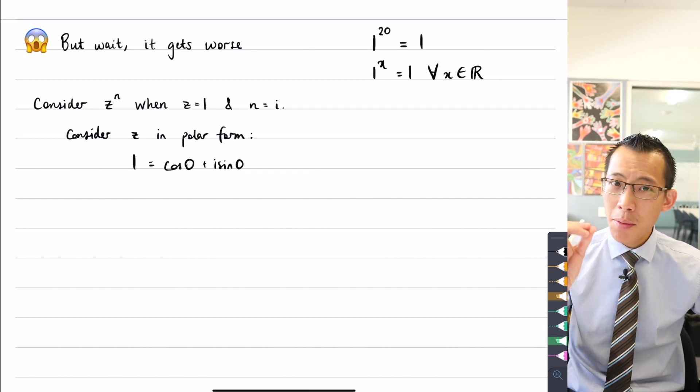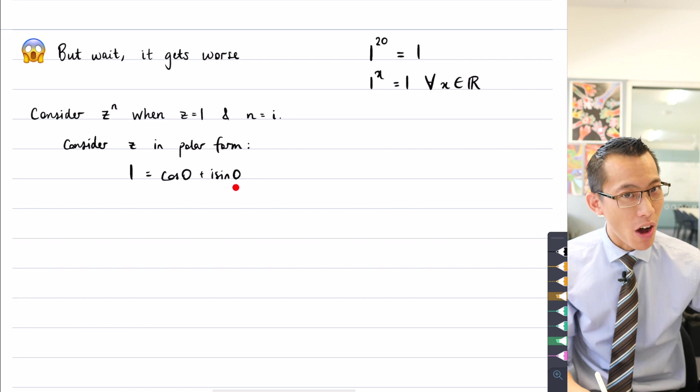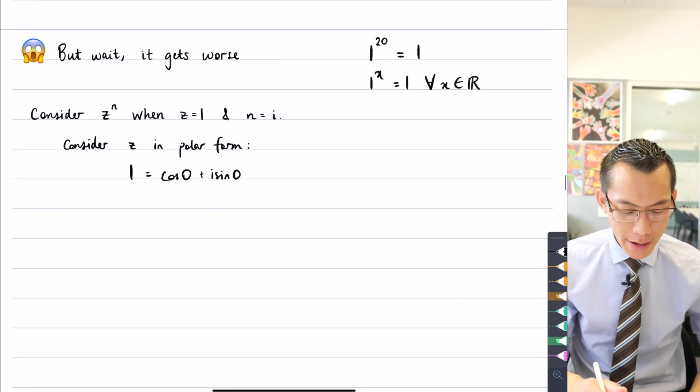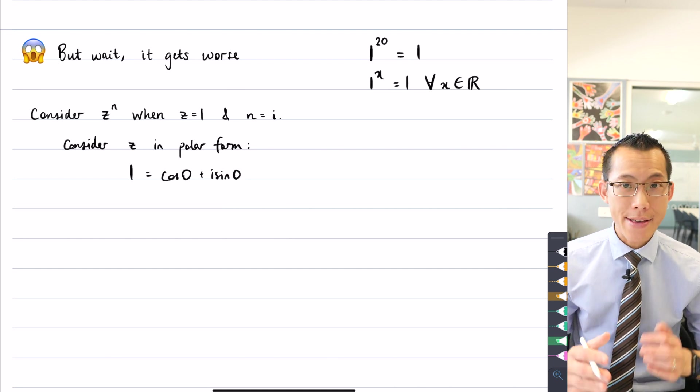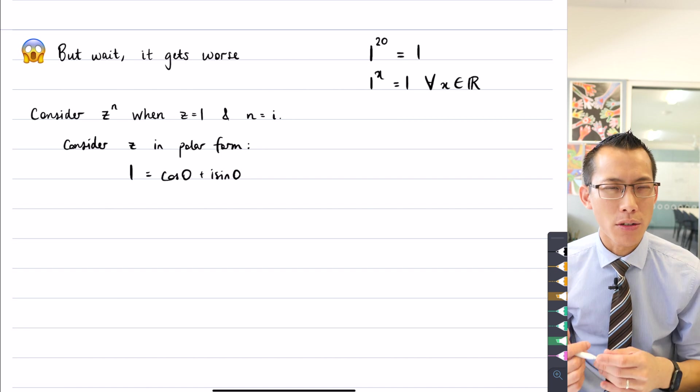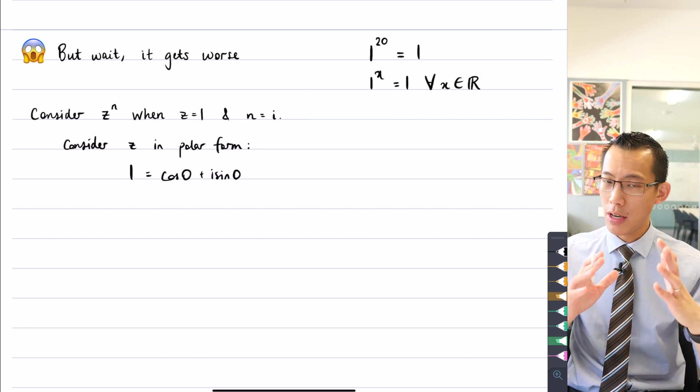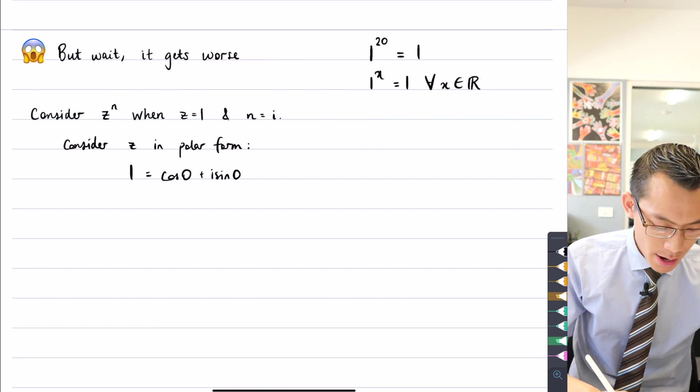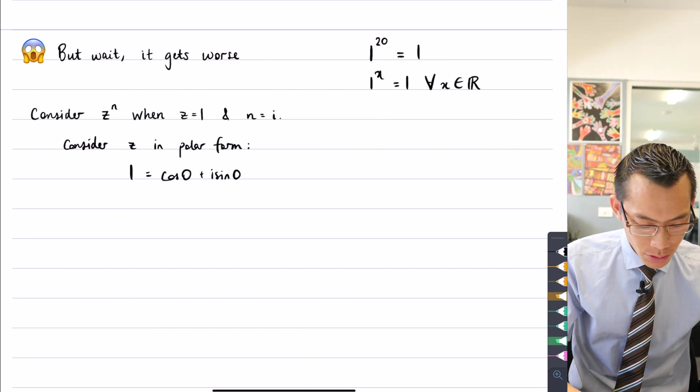This is not the only way to write one as a complex number, as a number on the complex plane. And because of the periodicity of cos and sine, like they repeat every two pi radians, I can write one in an infinite number of other ways just by adding or subtracting multiples, integer multiples of two pi. So just to look like one multiple of two pi on either side, I can say well it's also...